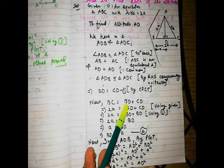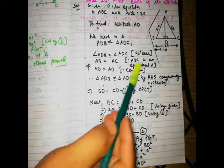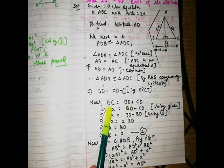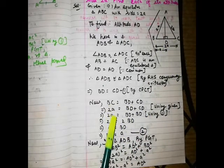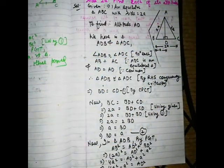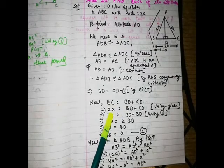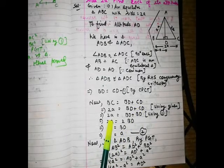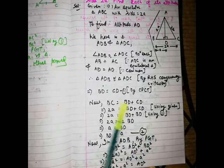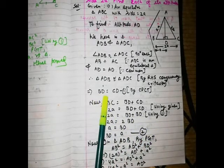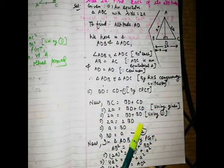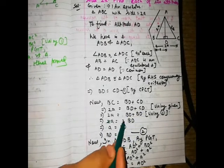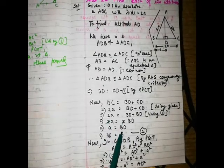BC equals BD plus CD, as seen from the figure. BC is 2a since each side of equilateral triangle ABC is 2a. Therefore 2a equals BD plus CD. Using equation 1, where BD equals CD, we get 2a equals 2·BD, so BD equals a.